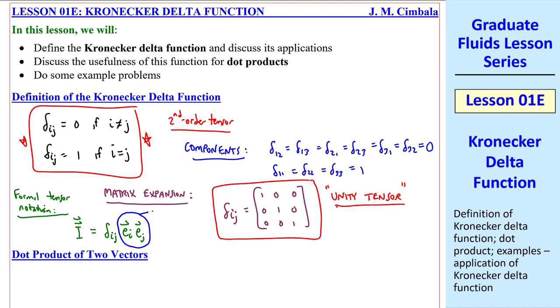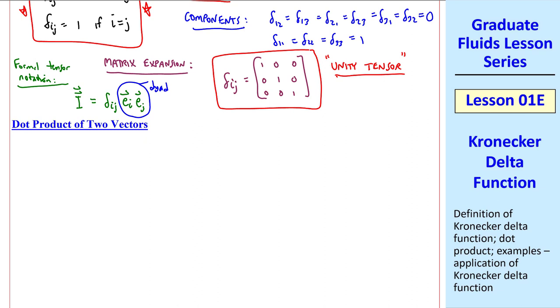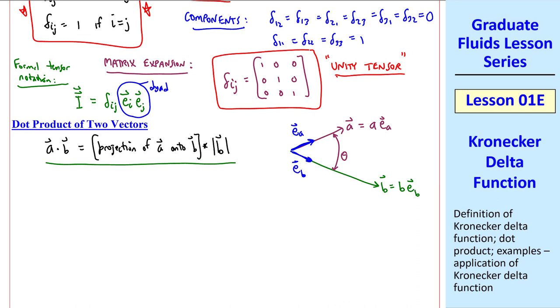The delta function is particularly useful when you're taking the dot product of two vectors. Remember from your math class that a dot b is the projection of a onto b times the magnitude of vector b. Suppose we have some vector a, which is a times ea, ea being the unit vector in that direction. Similarly, some other vector b is b times eb. Let angle theta be the angle between these two vectors. By this definition, we need the projection of a onto b. That would be a cosine theta.